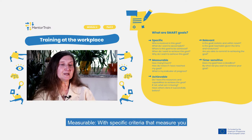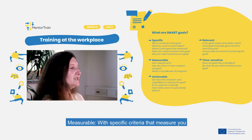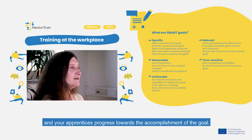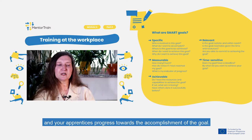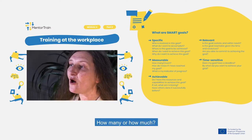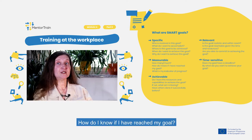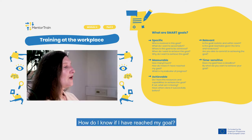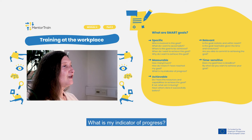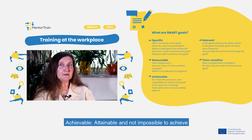Measurable — with specific criteria that measure your and your apprentice's progress toward the accomplishment of the goals. How many or how much? How do I know if I have reached a goal? What is my indicator of progress?